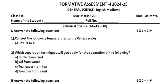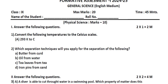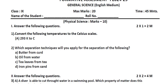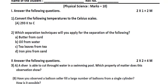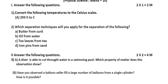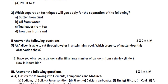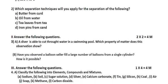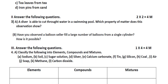First term: 2 into 1 is equal to 2 marks. The physics paper is 10 marks. 2 into 1 is equal to 2 marks. One more question is very important. 2 into 2 is equal to 4 marks.